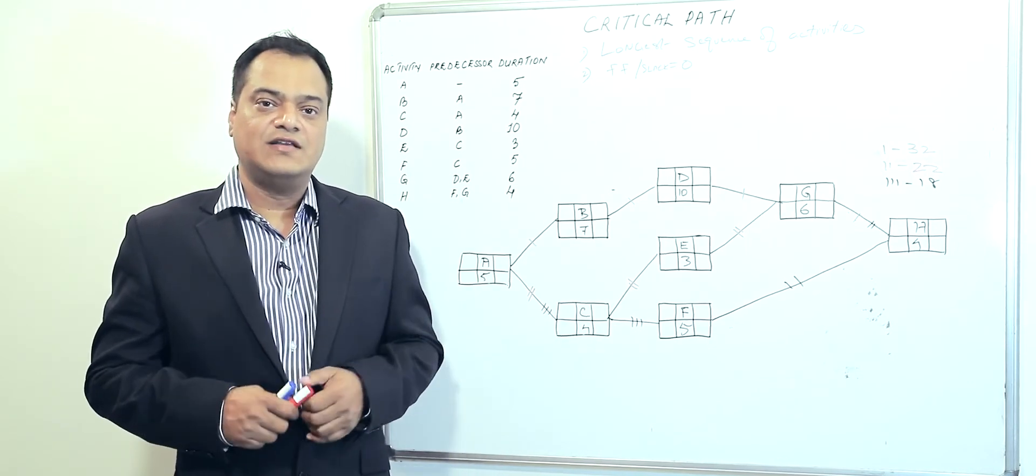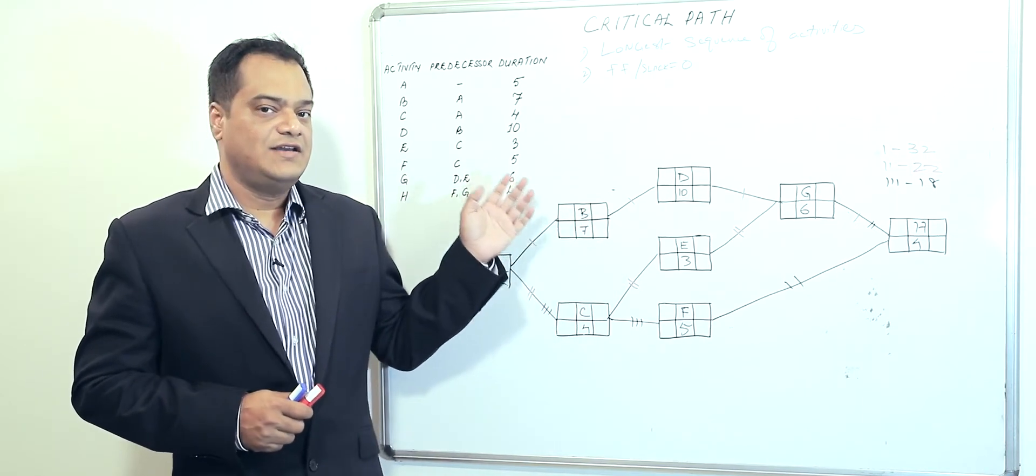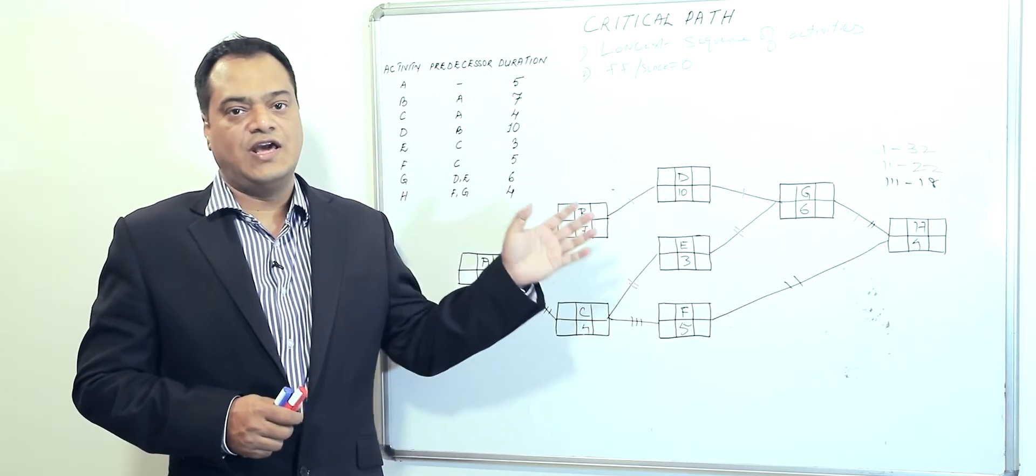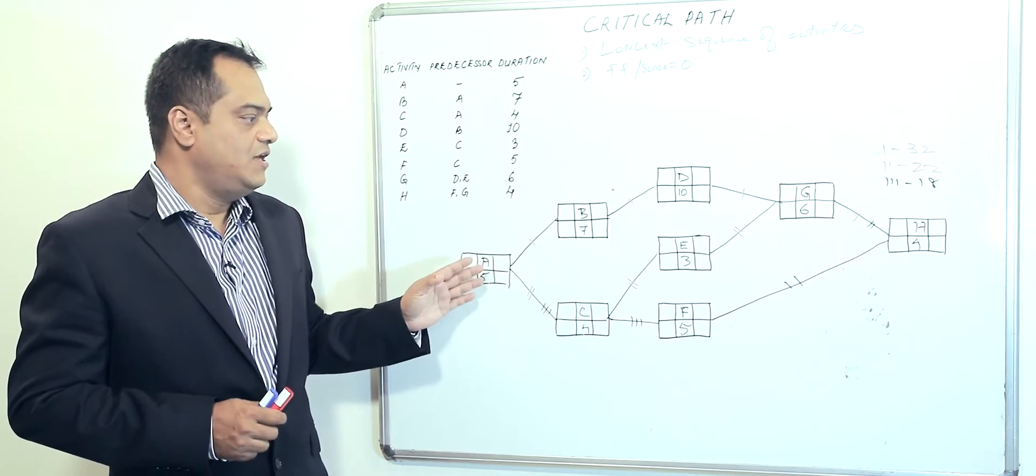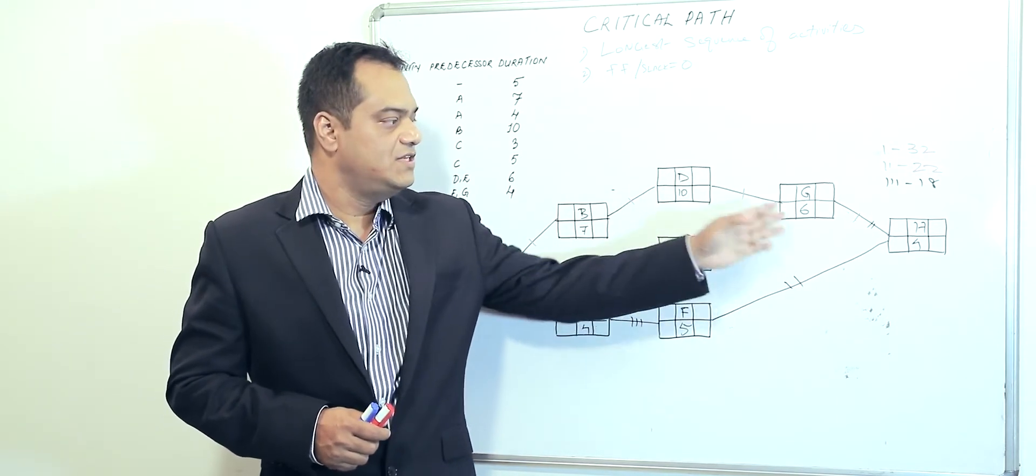What is critical path? When we look into this network diagram, critical path represents the longest sequence of activities in the network diagram. That means if we have got two or three different sequences of activity that lead to the finishing point, we need to see which path takes the longest amount of time.